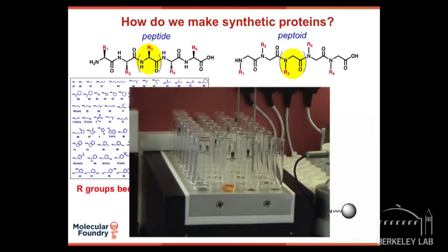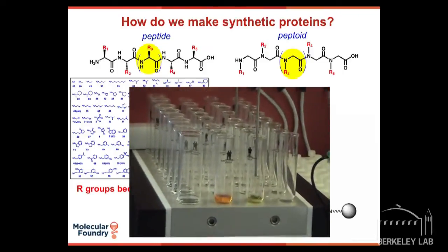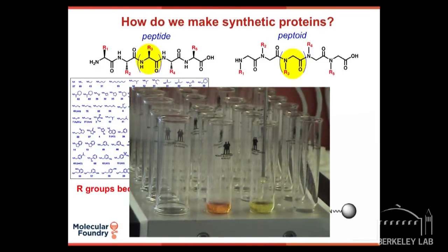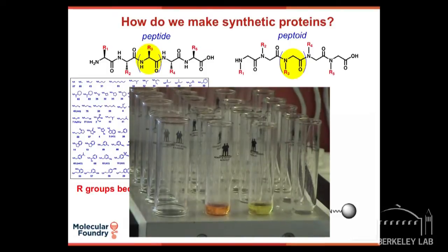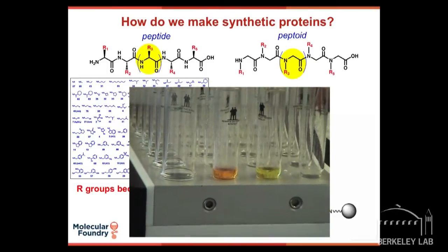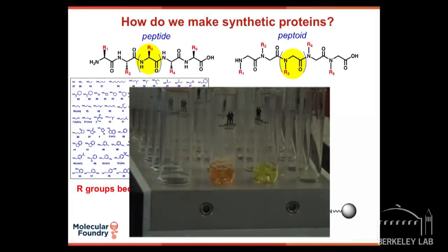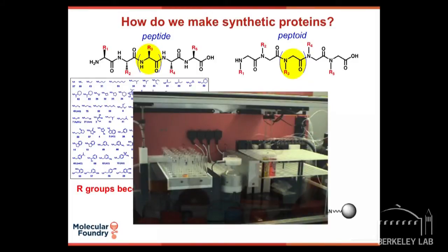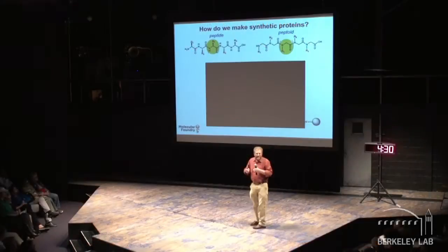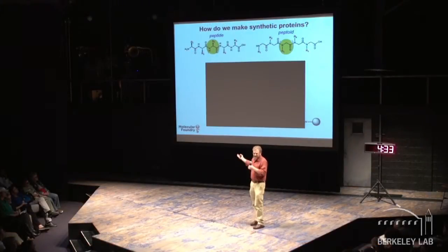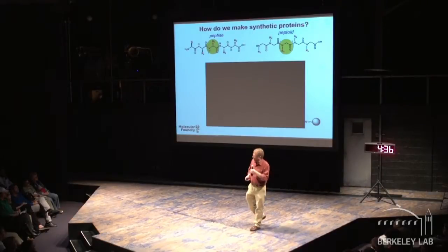We developed synthesis methods where we use robots to link these units together. Here I'm showing the addition of one of these beads along the chain. We can make all kinds of different sequences in parallel and then evaluate which ones work the best — adding one monomer, then another, doing parallel reactions. It takes about an hour to add each building block, but the robot can do it while you're home sleeping.